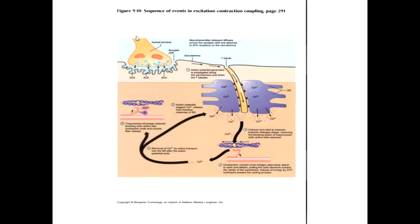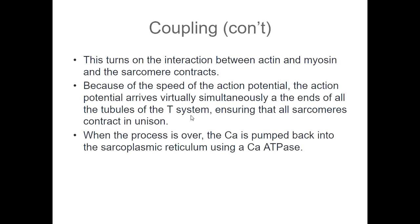So when our brain tells us to contract: the action potential rides down the motor neuron, causes the release of acetylcholine, acetylcholine causes the influx of sodium, that causes the action potential to follow along the sarcolemma, it goes down into the T-system, releases calcium, and that calcium allows the cross-bridge to be formed. At the end of the contraction, we get rid of acetylcholine with acetylcholinesterase, and we pump calcium back into the sarcoplasmic reticulum using calcium ATPase. With no more sodium coming in and calcium pumped back in, the muscle can relax.